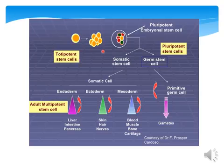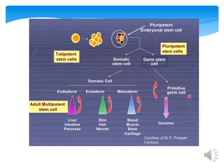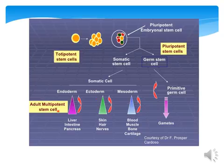You can also see in this figure the pluripotent embryonic stem cells, which give rise to germ stem cells — the primary or primitive germ cells — while somatic cells give rise to endoderm, ectoderm, and mesoderm. Any individual cell from these lineages is considered a multipotent stem cell.